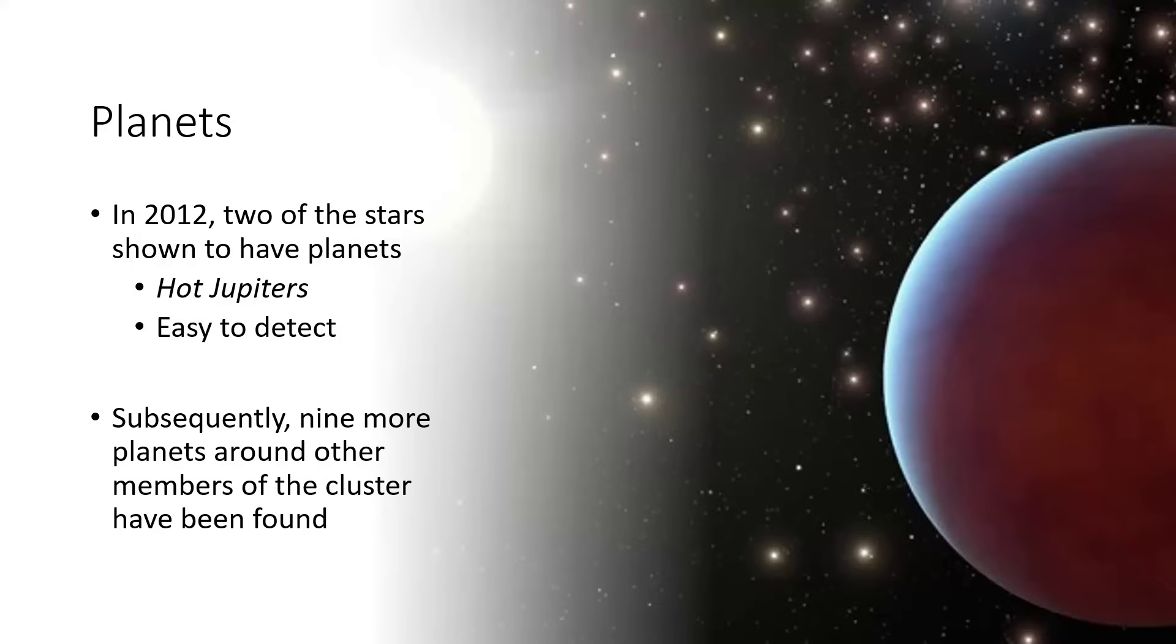What about planets themselves that are still bound to their stars? Well, in 2012, a couple of planets were found orbiting stars. There was some excitement because these were sun-like stars and this was quite early for the discovery of planets around sun-like stars, but these were shown to be hot Jupiters - so they were giant planets orbiting very close to their stars. There's a video that I did about hot Jupiters.